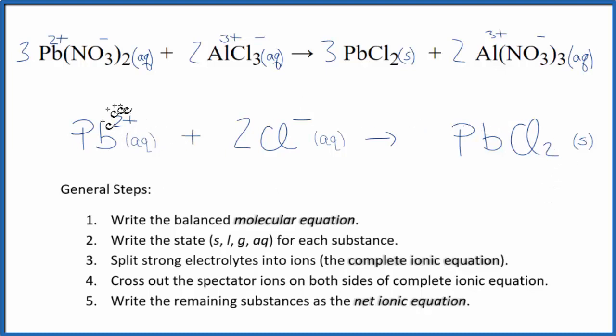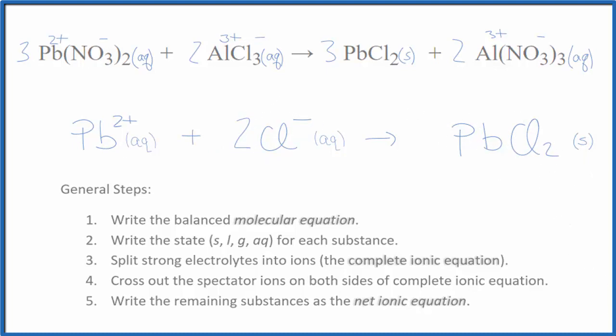You'll notice that charge is balanced. We have 2 plus here, and we have 2 times the 1 minus. So this here ends up with a neutral compound. We also have one lead atom on each side, 2 chlorines, and 2 chlorines. This is Dr. B, and thanks for watching.